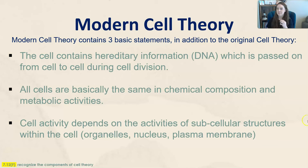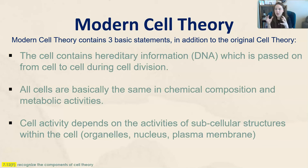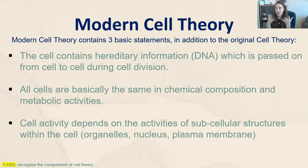Every cell has a job to do, and this cell activity depends on the jobs of its subcellular structures. 'Sub' means under or smaller, so subcellular structures within the cell — meaning its organelles, its nucleus, its plasma membrane — are all tiny things found within a tiny cell. The organelles, the nucleus, and the plasma membrane all have activities and jobs to do, and they help the cell perform a bigger job.